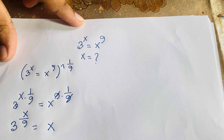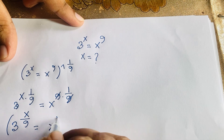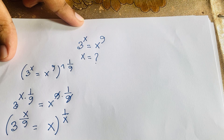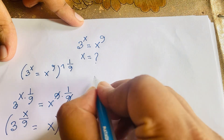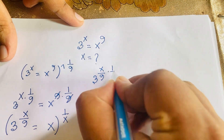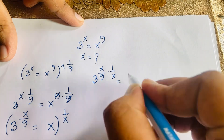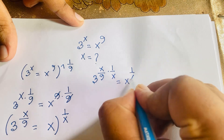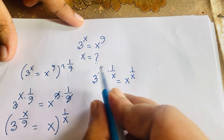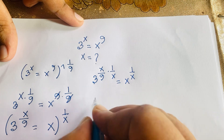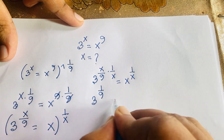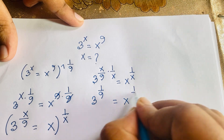Now I raise both sides to the power of 1 over x. It will be 3 to the power x over 9 times 1 over x, equal to x to the power 1 over x. The x and x cancel, and we find that 3 to the power 1 over 9 is equal to x to the power 1 over x.